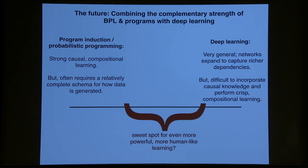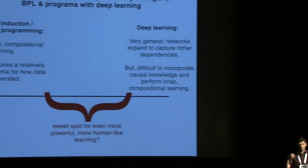And in deep learning, the algorithms are very general. Neural networks can capture richer dependencies in that you can make your network bigger if your dataset's bigger and capture more complicated types of correlations. And that's something that I don't think we've captured in program induction techniques but is an incredibly powerful aspect of deep learning. But it's difficult to incorporate prior knowledge, causal knowledge, if you have it or if you know that the mind uses it. And it's hard to perform crisp compositional learning in the same way you can with program induction. So I think there's a sweet spot for even more powerful human-like learning that hopefully combines the best of both where you can get strong, genuine compositional and symbolic learning but maintains the generality and also the power of deep learning to learn about distributions that have extremely complicated dependencies.